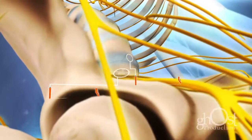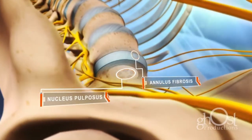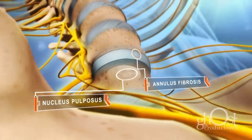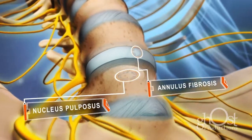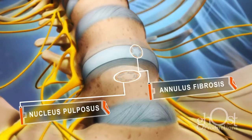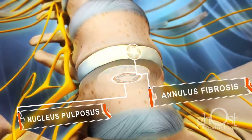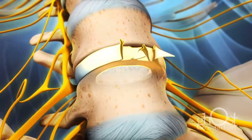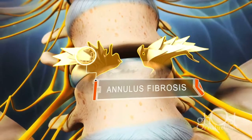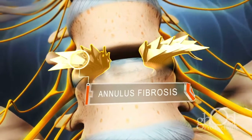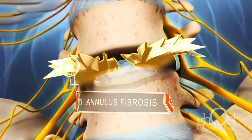A spinal disc consists of two main parts: the jelly-like nucleus pulposus in the disc center, and the outermost layers collectively called the annulus fibrosis. These two components facilitate the spine's movement and provide support for the vertebrae.